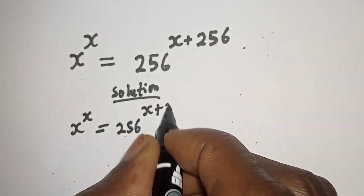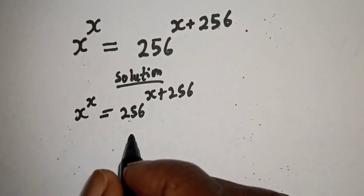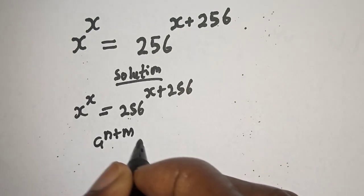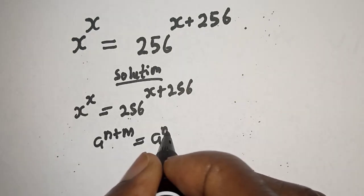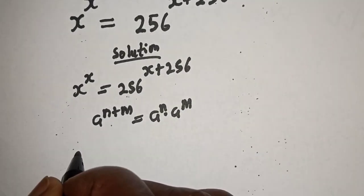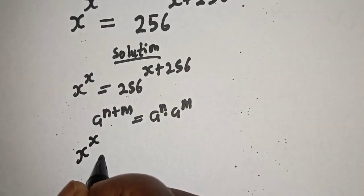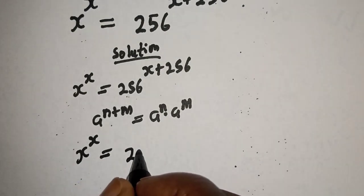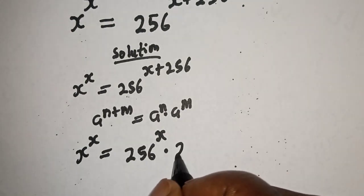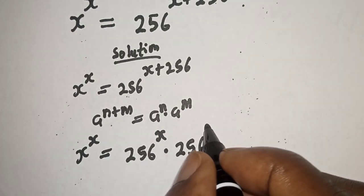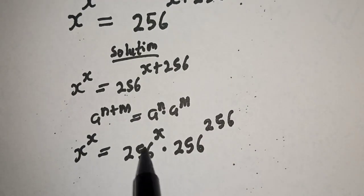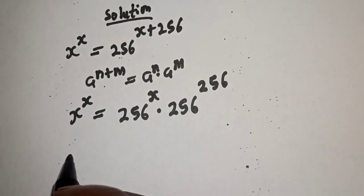Solution: we have s raised to power s is equal to 256 raised to power s plus 256. Take note of this exponential rule: if you have a raised to power n plus m, this is equal to a raised to power n multiplied by a raised to power m. So s raised to power s is equal to 256 raised to power s multiplied by 256 raised to power 256.